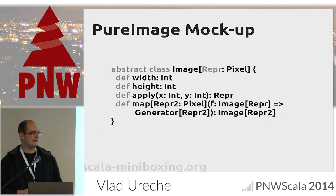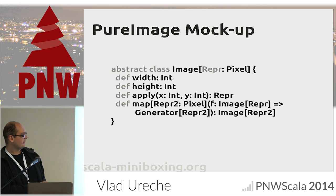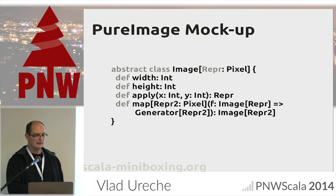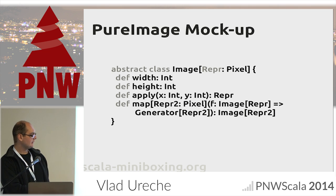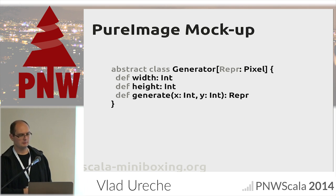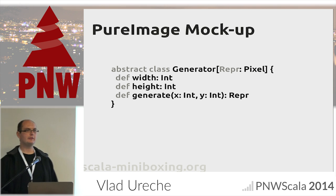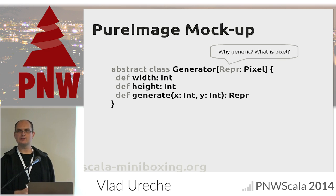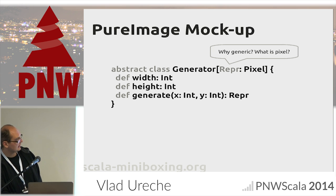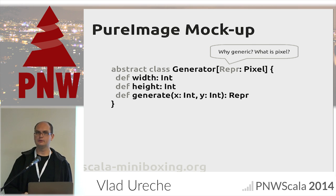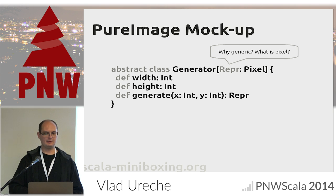I'm going to show you a few abstractions from the PureImage mockup. We have Image: given an X and a Y, it gives you a pixel. You can also map over this image with something that takes an image and gives you back a generator for a new image. A Generator specifies a width, height, and a method to generate each pixel. Pixels are generic — I'm taking a type parameter for the wrapper representation, with a Pixel type class constraint.